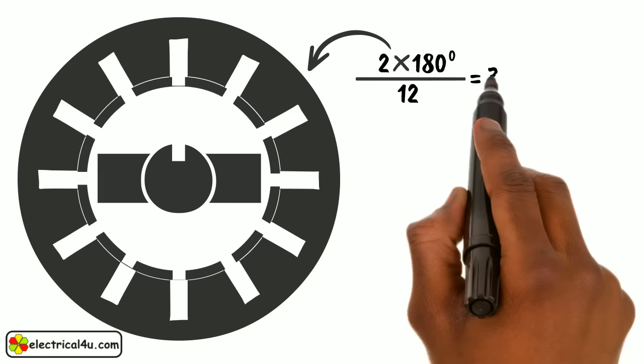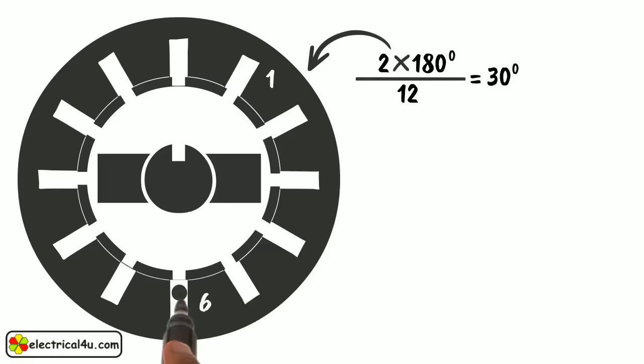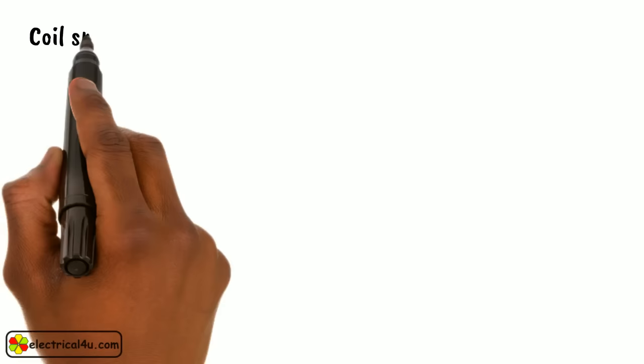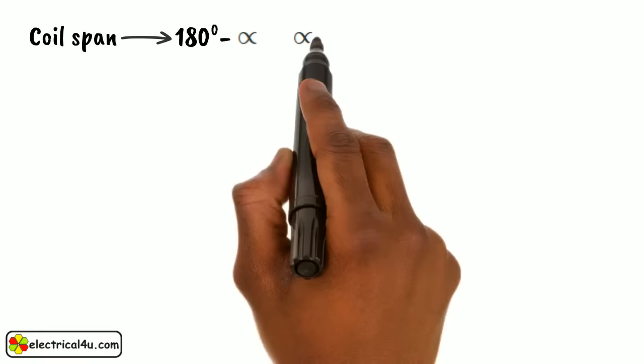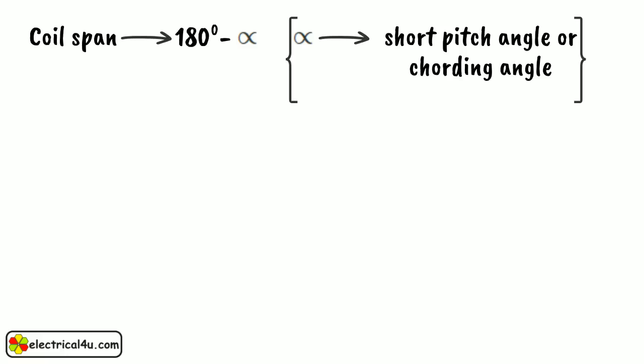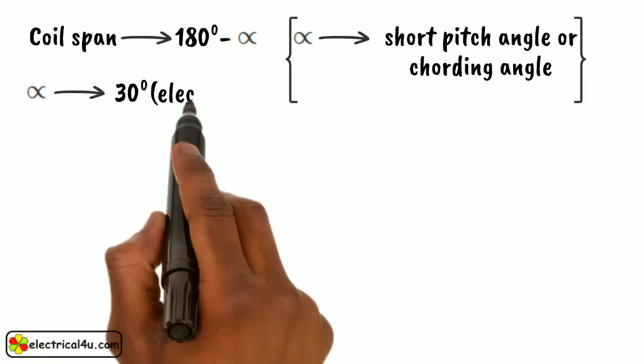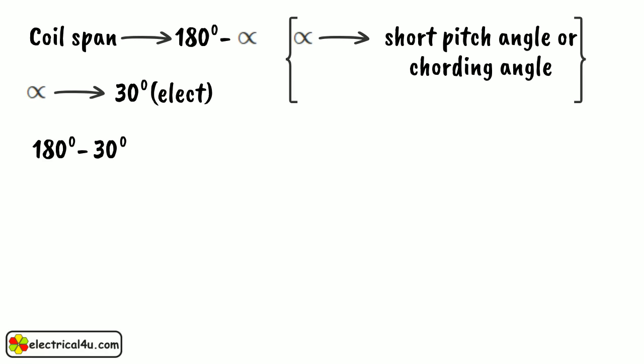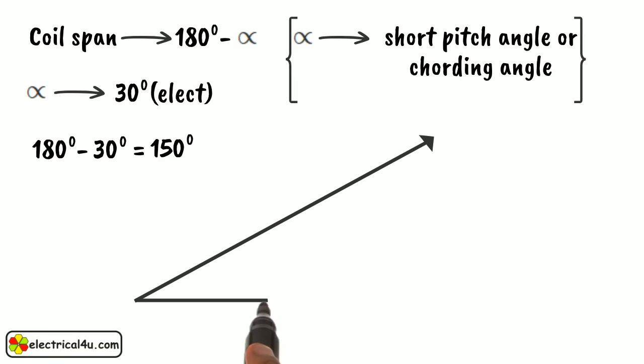Consider the case of short pitch winding in the previous example. If the coil is short pitched by one slot, then if one coil side is placed in slot one, the other side of the coil must be placed in slot six. The coil span for short pitch winding equals 180 degrees minus alpha, where alpha is the short pitch angle or cording angle. Since each slot constitutes 30 degrees electrical, the coil span would be 180 degrees minus 30 degrees, which is 150 degrees.